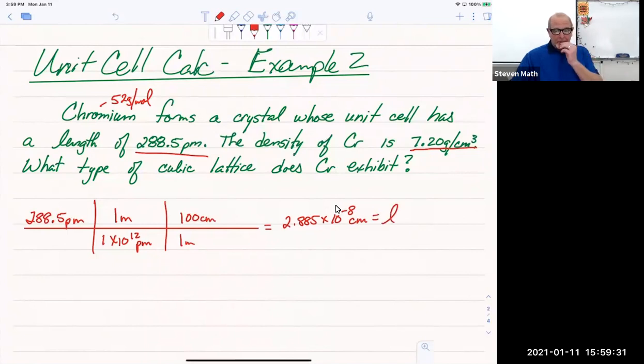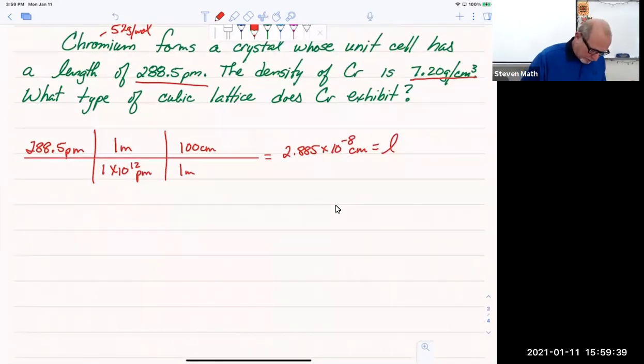But remember, we've got density. So to get rid of this density and get a mass, I've got to get volume from my L. Simple cubic, or not simple cubic, but cubic unit cell. So I know that V equals L cubed. That's for all cubes.